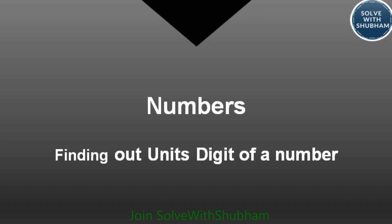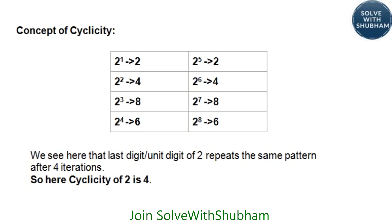To understand this concept, it is important to understand the concept of cyclicity. 2 to the power 1 ends with 2. 2 to the power 2 ends with 4. 2 to the power 3 is 8, so the unit digit is 8. 2 to the power 4 is 16, so the unit digit would be 6.